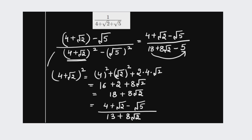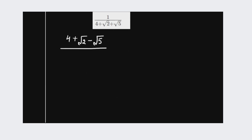After solving this part we get 4 plus root 2 minus root 5, divided by 13 plus 8 root 2. But we can see we still have a root value in the denominator place, so we have to rationalize this equation again. We multiply by 13 minus 8 root 2 over 13 minus 8 root 2.